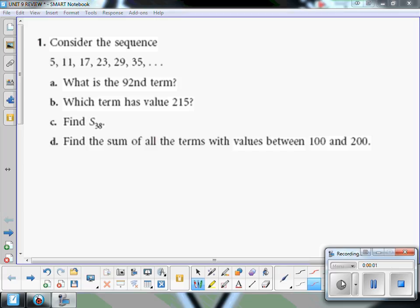A quick overview of number one and then we'll specifically look at 1D in more detail. Consider the sequence 5, 11, 17, 23. So first of all, what is it growing by? Six. So does that make it arithmetic? Yes, it's arithmetic and it's growing by six.